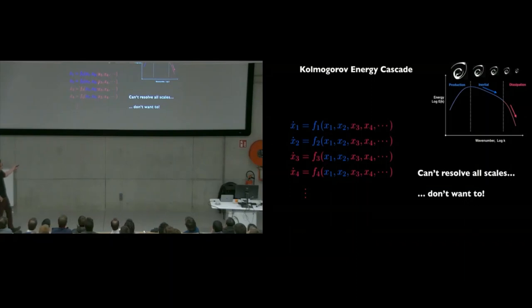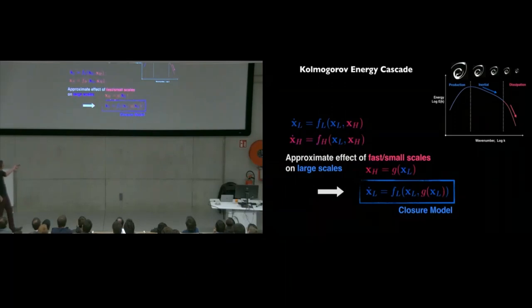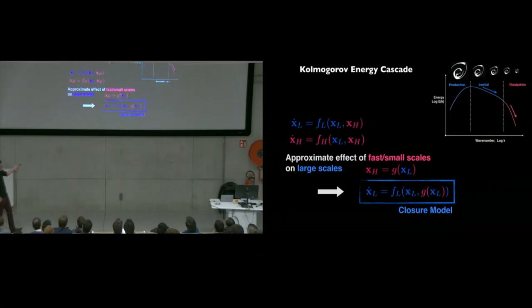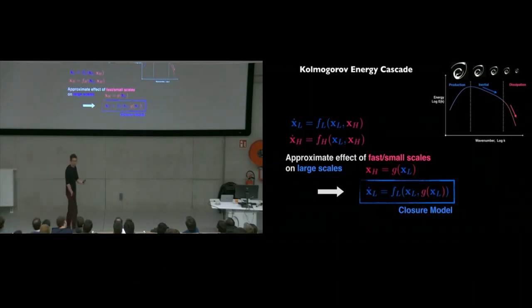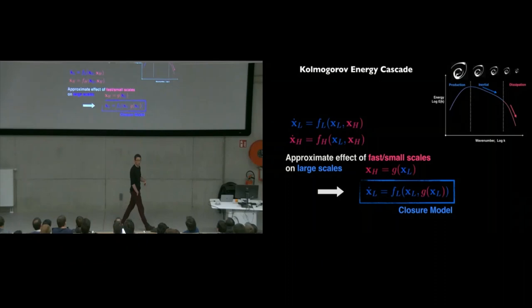We want to know how the large scales evolve without explicitly modeling the small scales, but including an accounting of them on how they affect the large scales. Here's how you would write it down in math. You have a really high dimensional system of equations and everything depends on everything. But at some point I want to just neglect all of these pink variables. I care about how they affect the blue variables, but I can't keep track of all the pink variables. So what I want to do is find some model of how those high frequencies would depend on the low frequencies, and then build this model so that everything is a function of my large coherent structures here. That's what I want.